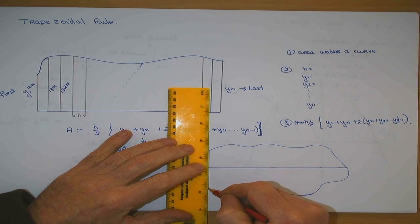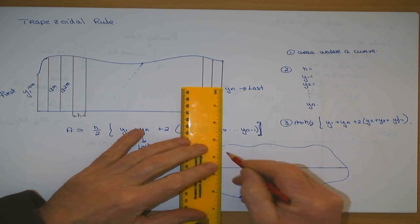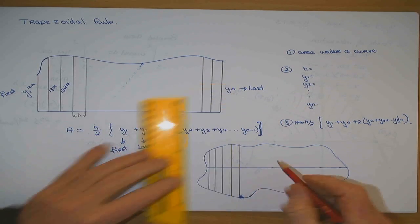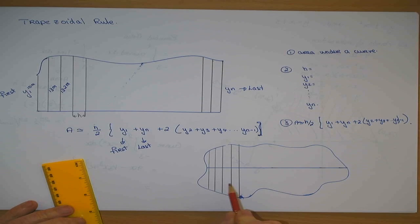And then what we do is we divide it up into rectangles. That side is one trapezoidal rule and this side is a separate trapezoidal rule.